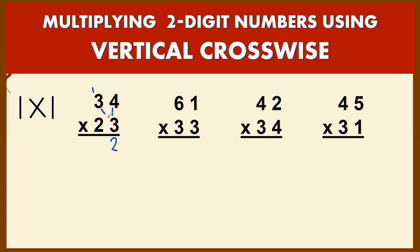So you have 3 times 3 is 9, then 2 times 4 is 8. Plus 1, that's 9 plus 9, which is 18. Bring down 8 and carry 1. 2 times 3 is 6, plus 1 you have 7. Your final answer is 782.